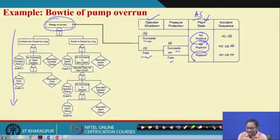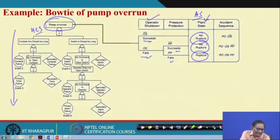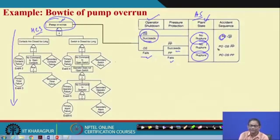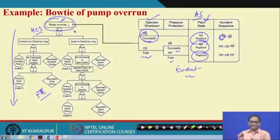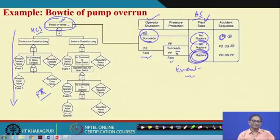But if the relief valve fails, rupture will take place. If I know the minimal cut sets for pump over-run, every MCS leads through this path: pump over-run takes place, and the path goes through either operator shutdown success or failure and then relief valve success or failure. This creates the bow tie — one hand the fault tree, the other hand the event tree. The fault tree explains why pump over-run happens; the event tree explains how the system behaves if pump over-run takes place, to restore normalcy.